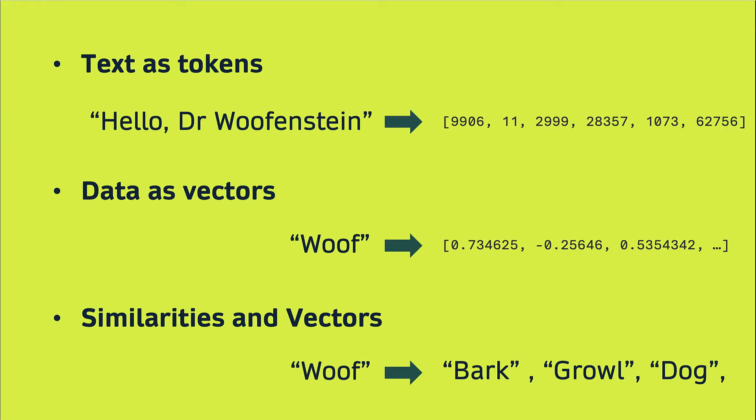So that's what we want to cover in this video. I wanted to cover three concepts. The first one is text as tokens. The second one is text as vectors. And the third one is similarities and vectors. And we're going to briefly mention read augmented generation because that kind of ties those things together.